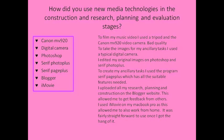To film my music video I used a tripod and the Canon MV920 video camera. It was very bad quality but I had to make the best of the materials I was given. To take the images for my ancillary tasks I used a typical digital camera. I edited my original images on Photoshop and Serif Photo Plus, though it was very hard at the start as I'd never used these programmes before. To create my ancillary tasks I used Serif Page Plus, and as I was familiar with the software it was very straightforward to use.